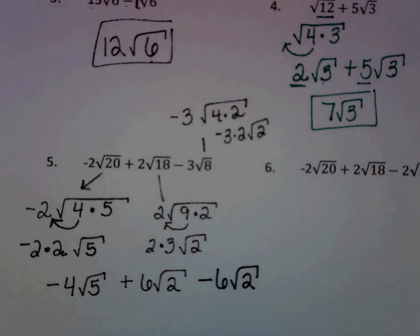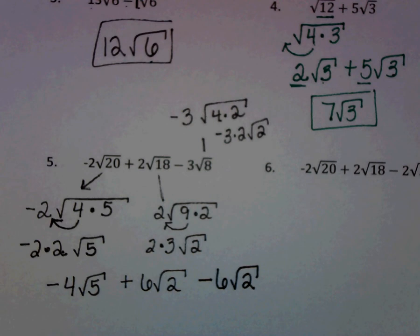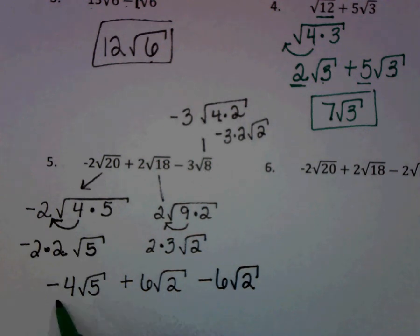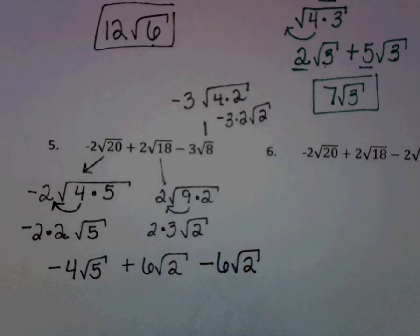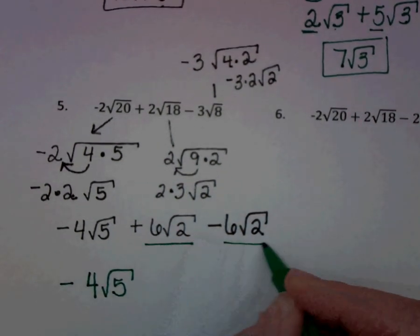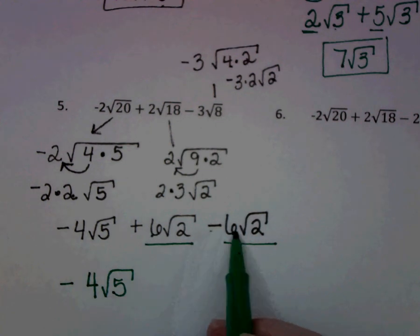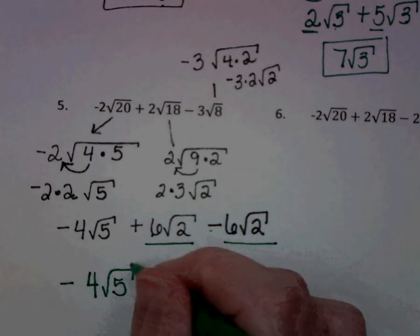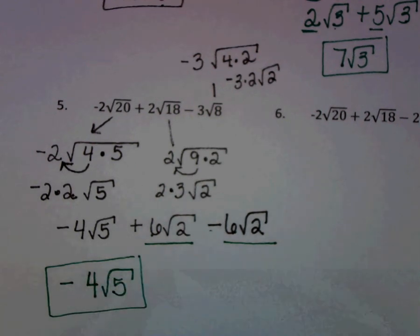If that confused you, think about it for a second, pause the video, and go back and re-listen if needed. Now let's find our like terms. Negative 4 times the square root of 5 — there is no other square root of 5, so that stays as is. The square root of 2 terms: 6 minus 6 is 0, so that completely cancels out. We have nothing else left, and so our simplified expression is negative 4 times the square root of 5.